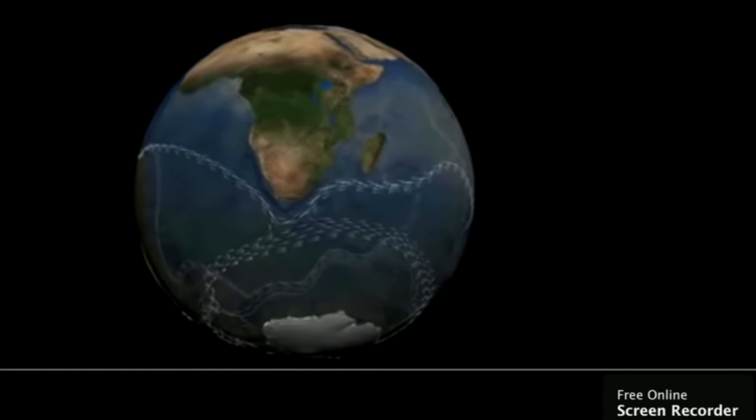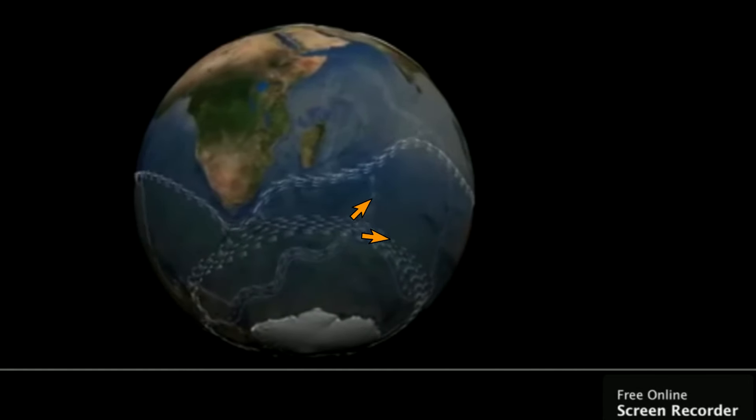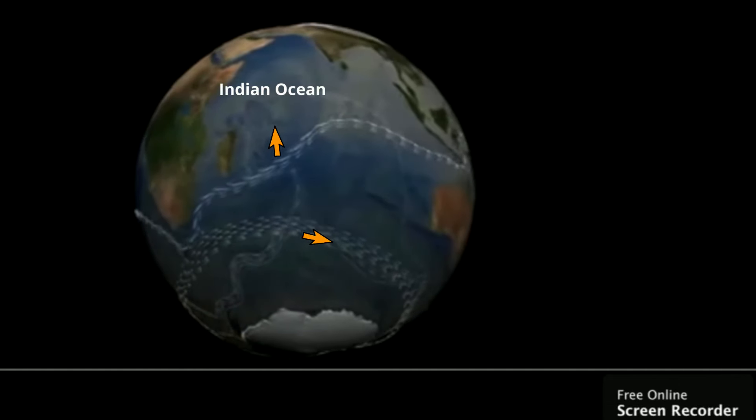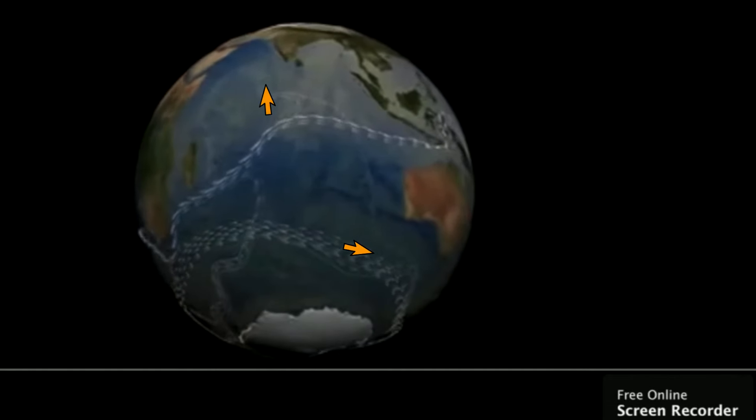As it moves around Antarctica, two sections split off of the conveyor and move northward. One section moves into the Indian Ocean, the other into the Pacific Ocean.